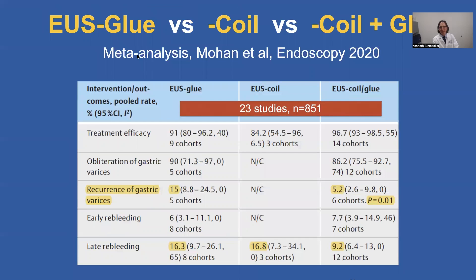This is a meta-analysis comparing all studies looking at glue treatment versus EUS-guided coil versus EUS-guided coil and glue — 23 studies, 851 patients. The recurrence of gastric varices was significantly lower in the EUS-guided glue group. Late bleeding was numerically lower but did not reach statistical significance.